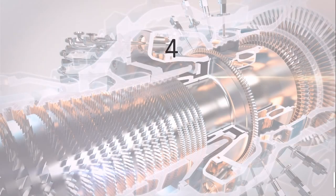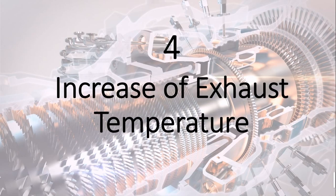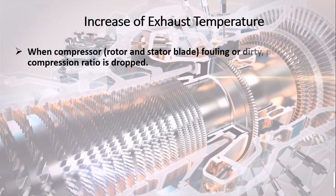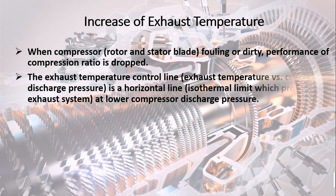Reason 4: Increase of exhaust temperature. When the compressor rotor and stator blades are fouling or dirty, the performance of the compression ratio is dropped. The exhaust temperature control line — exhaust temperature versus compressor discharge pressure — is a horizontal line, an isothermal limit which protects the exhaust system at lower compressor discharge pressure.